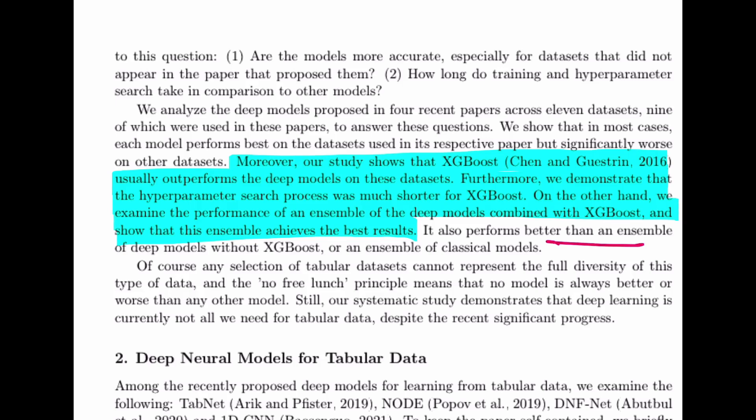Our study shows that XGBoost usually outperforms deep learning models on the datasets where the deep learning paper was not published. A lot of deep learning models suggested for tabular data had their papers published. What they have figured out is when you check the same deep learning model with a different dataset other than the one published in the paper, XGBoost actually outperforms.